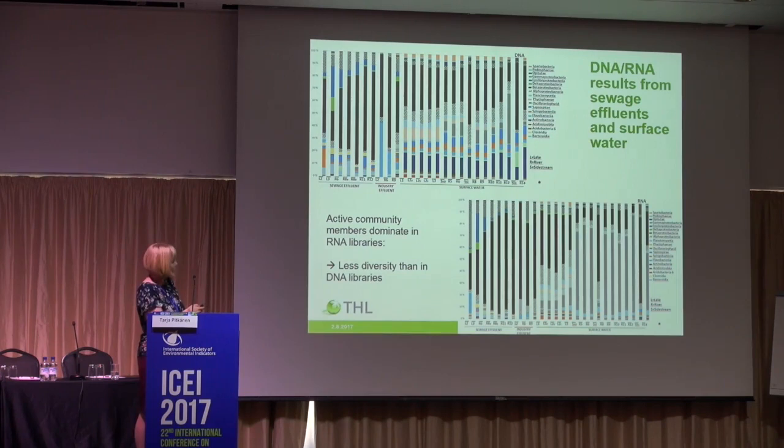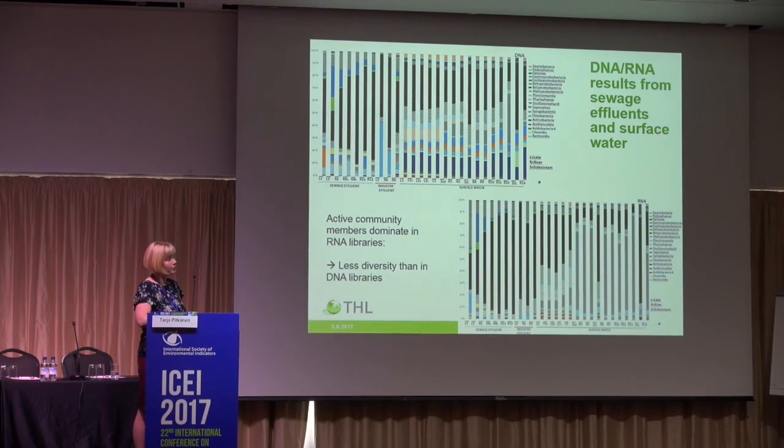Here is an example of how the taxonomy of bacterial communities in sewage and surface water changes between the DNA and RNA fractions in our water samples. We have the DNA fraction of sewage and the RNA fraction from the same sewage samples. What we see is not much difference — there are some changes but not many.